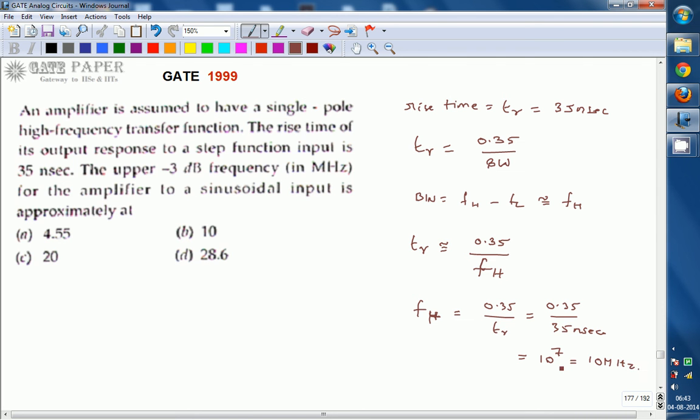Upper 3 dB frequency for this amplifier, whose rise time is 35 nanoseconds, will be 10 megahertz. The right answer for this question is B. Thank you.